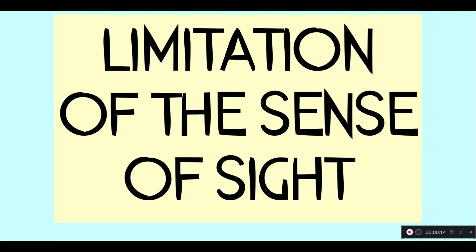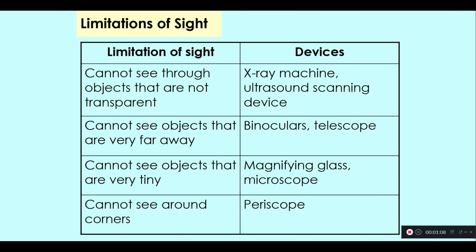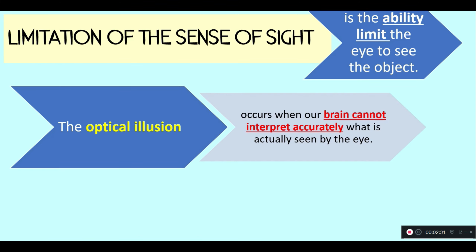Limitation of the sense of sight is the ability to limit the eye to see the object. Our eyes cannot see through objects that are not transparent, very far away, and very tiny, and we also cannot see around corners. Other than that, there are also optical illusions and blind spot.